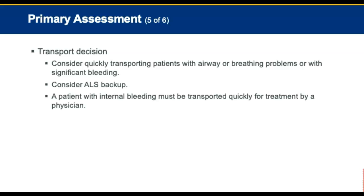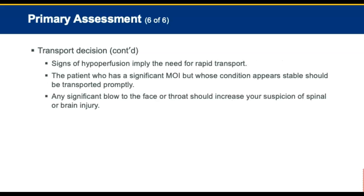For the transport decision, consider quickly transporting patients with an airway or breathing problem or with significant bleeding. Stabilization and maintenance of the airway and breathing, as well as control of bleeding, may be very difficult in patients with face and neck injuries. Consider advanced life support backup if the transport is too long. Patients with internal bleeding must be transported quickly for treatment by a physician. Signs of hypoperfusion imply the need for rapid transport. Any significant blow to the face or throat should increase your suspicion of spinal or brain injury.